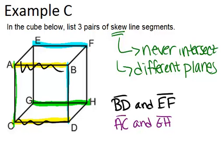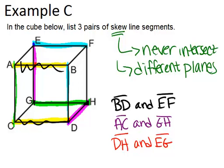A third example would be DH and EG. Again, for the same reason, if you were to extend those, they would never intersect and they're also not in the same plane. That's what makes them skew line segments.